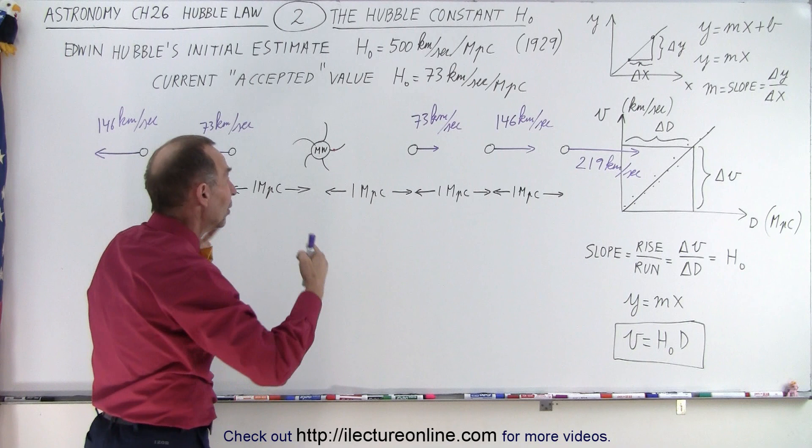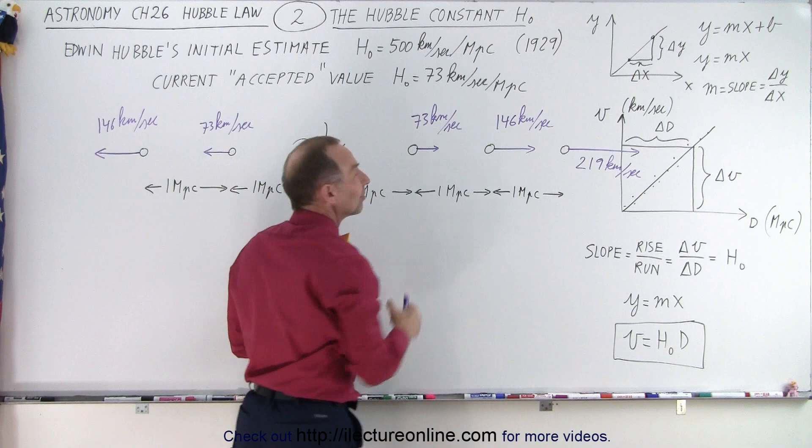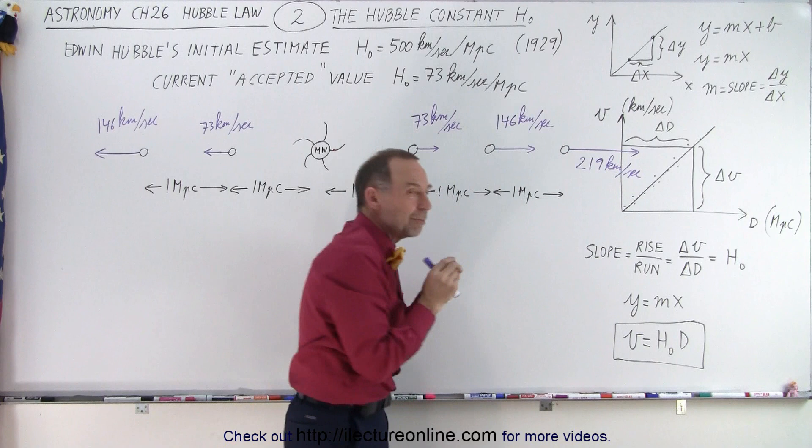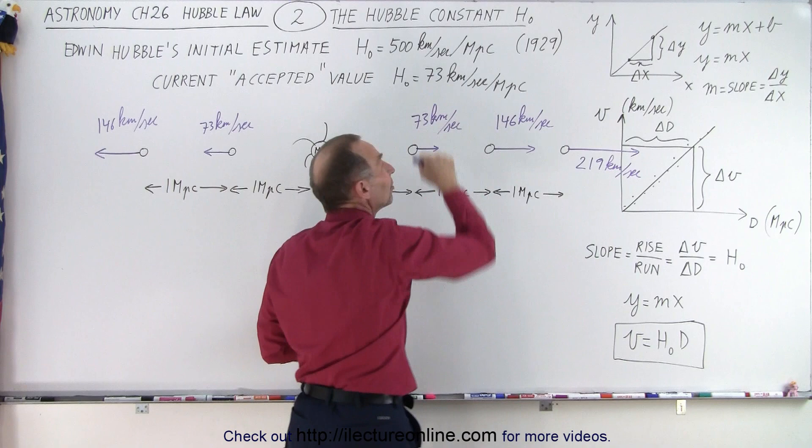And that's what we mean by the Hubble constant. Since it's a constant, we can then rely on knowing how far galaxies are simply by measuring their velocities. So typically we do it the other way around. We measure the velocity because that's easy to measure. We simply measure the redshift and from that we can then calculate the distance, presuming that this is the correct value.